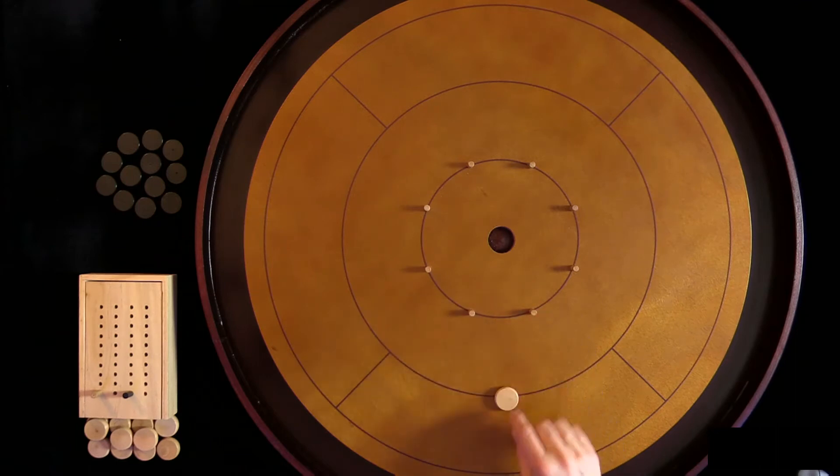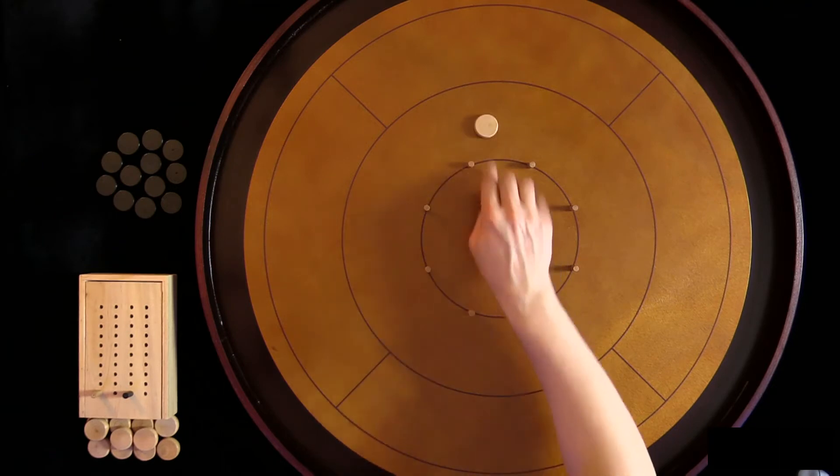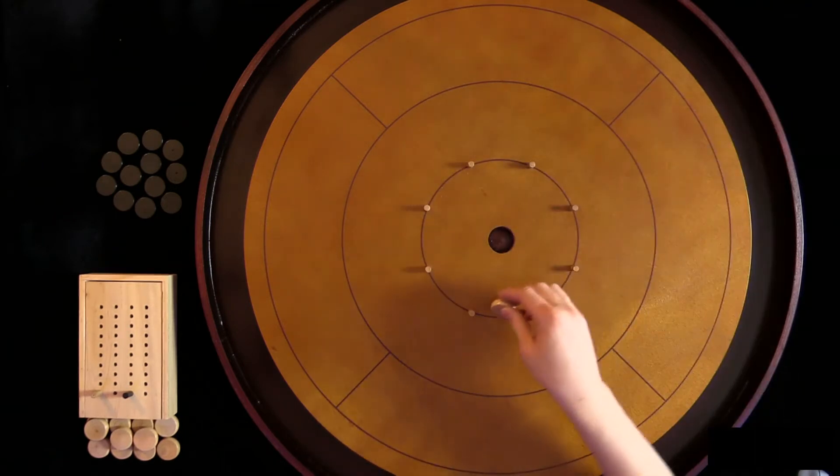So again if it's on this line it's worth 5. If it's on this line it's worth 10. This line, it's in the gutter, it's out. So I must try to get it in here. If I overshoot it, it's removed.